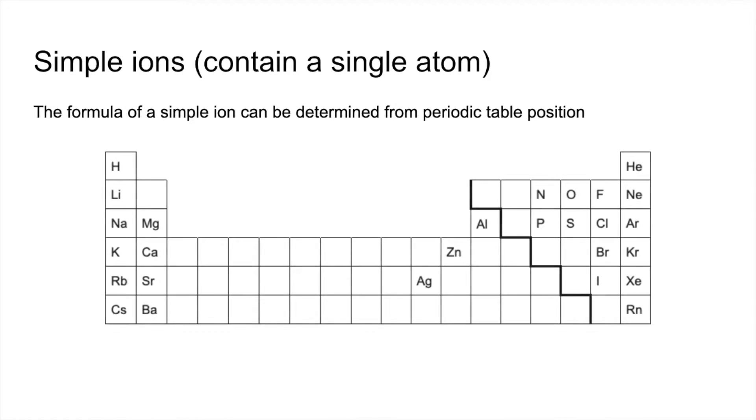So we're going to look at these here. Starting with these, these all form a 1 plus ion. Obviously these are fairly straightforward. Group one, lose one electron to get the full outer shell that's underneath. And that gives them a 1 plus charge. This is the only odd one that's not obvious. So silver forms a 1 plus ion.